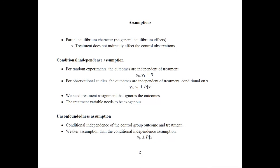The third is the unconfoundedness assumption: a weaker form of CIA requiring only that the control group's outcome Y0 is independent of treatment assignment conditional on X. At minimum, being assigned to treatment should not affect the control group's outcomes — this is very important.